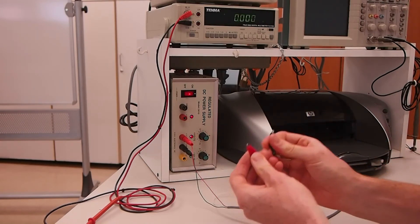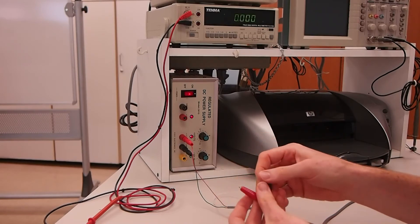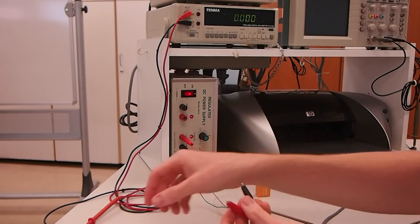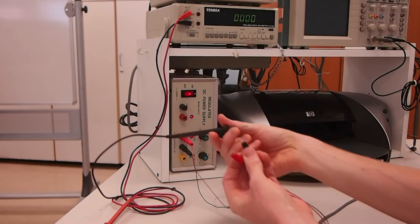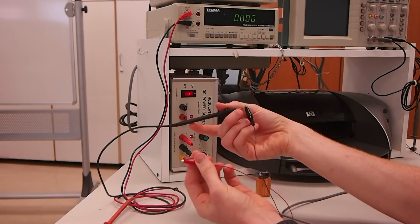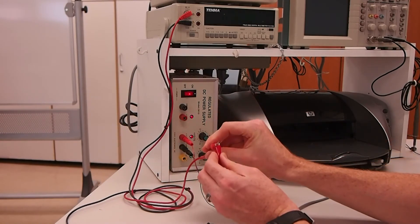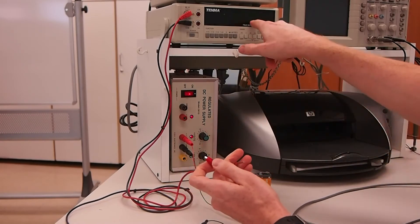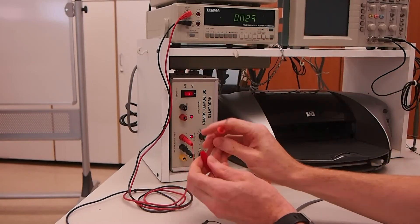But before you ever hook this up to a circuit, you definitely want to check that it really is what you think it is. So let's use the meter to do that. I'll just clip the black lead with the black alligator clip and red lead here. We're going to want to set our meter back to volts before we do that.